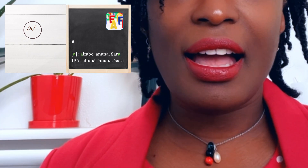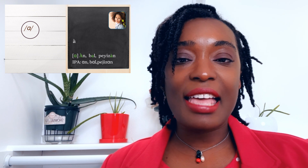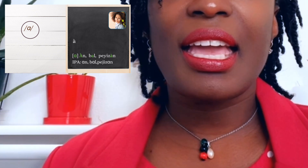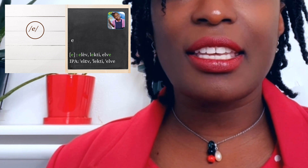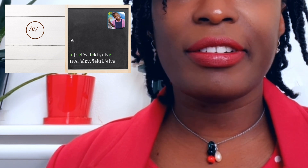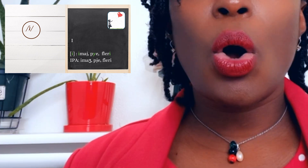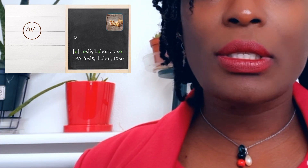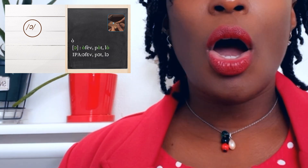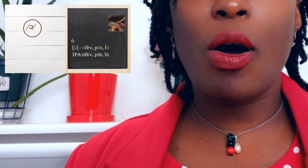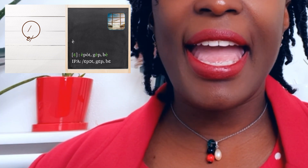Now we are going to cover all the vowel sounds, starting with a as in anana, a as in an, a as in espagueti or eleve, i as in imaj, o as in osle, u as in ouvrier, o as in ofev, e as in epote.